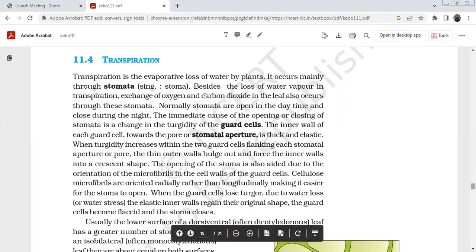Besides the loss of water vapor in transpiration, exchange of oxygen and carbon dioxide in the leaf is also affected. The stoma is also affected by the stem. In secondary growth, there is an exchange of gases in the stem.